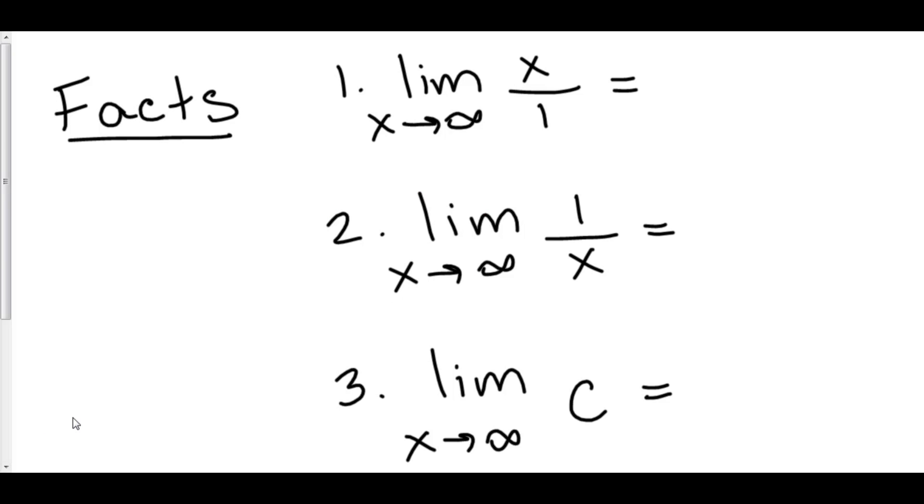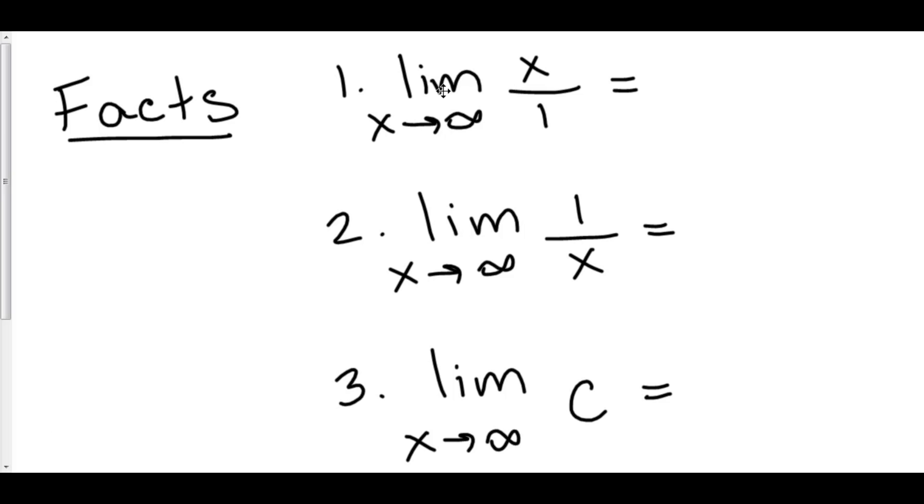And there are some facts to consider. What happens as x goes to infinity and your numerator is expanding much faster than your denominator? We could put in some values of x to see what's happening here. Let's try 10. 10 over 1 is 10. How about 100? How about 1,000? How about 1,000,000? This fraction is getting bigger and bigger and bigger. And as x goes to infinity, this fraction also is going to go to infinity.